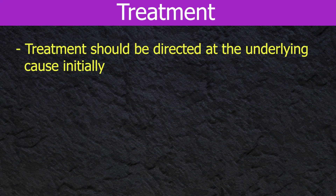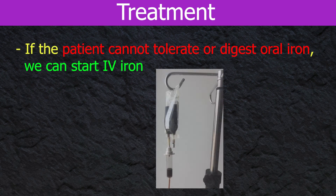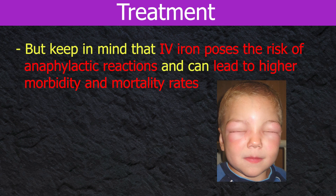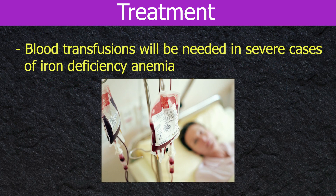Treatment should be directed at the underlying cause initially. Oral iron as ferrous sulfate or ferrous fumarate can be used as the first-line therapy. If the patient cannot tolerate or digest oral iron, we can start IV iron. However, keep in mind that IV iron poses the risk of anaphylactic reactions and can lead to higher morbidity and mortality rates. Blood transfusions will be needed in severe cases of iron deficiency anemia.